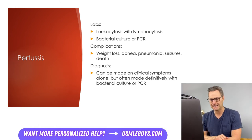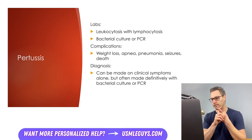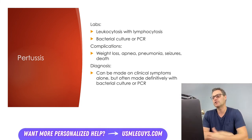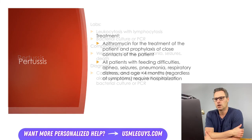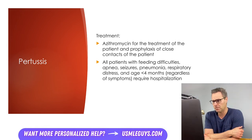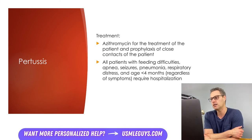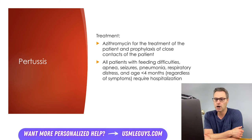Complications to watch for include weight loss from post-tussive vomiting, difficulty feeding infants with frequent cough, and apnea — especially in infants under six months who haven't completed their vaccination series. Death occurs in about 1% of infants under six months of age. Pertussis should be treated with a macrolide, usually azithromycin, which is also given as prophylaxis to any close contacts. Hospitalization is required for any patient experiencing feeding difficulties, apnea, seizures, pneumonia, or respiratory distress, as well as any patient under four months regardless of symptoms, as they can deteriorate very fast.